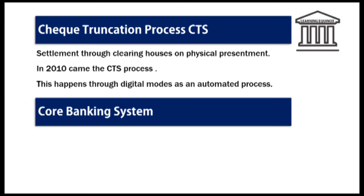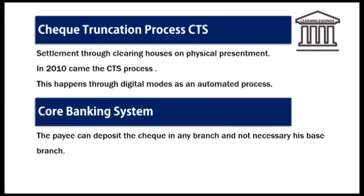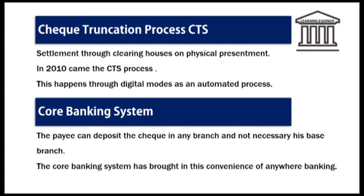Another significant aspect is the core banking system. With the core banking system, the payee can deposit the check in any branch and not necessarily in their base branch. Thus, if a payee's account is in a Mumbai branch of XYZ bank and he visits Delhi, he can deposit the check in any branch of XYZ bank in Delhi and the bank will process the check. This is the benefit of the core system available in banking — the core banking system has brought about the convenience of anywhere banking.